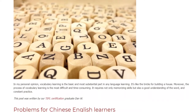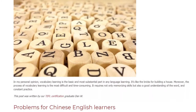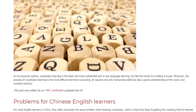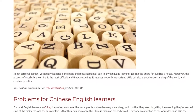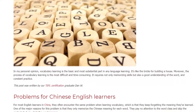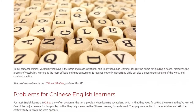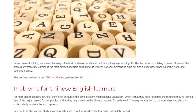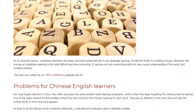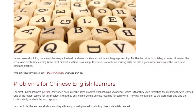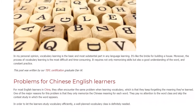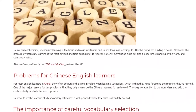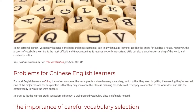For most English learners in China, they often encounter the same problem when learning vocabulary, which is that they keep forgetting the meaning they've learned. One of the major reasons is that they only memorize the Chinese meaning for each word. They pay no attention to the word class and skip the context study in which the word appears. In order to let the learners study vocabulary efficiently, a well-planned vocabulary class is definitely needed.